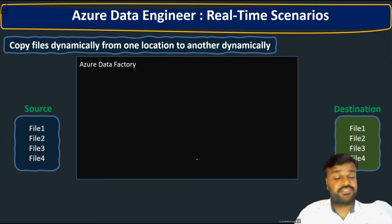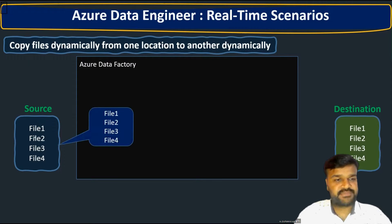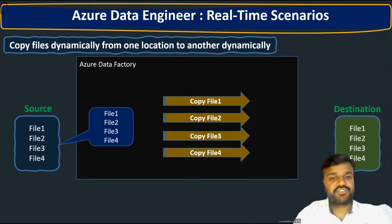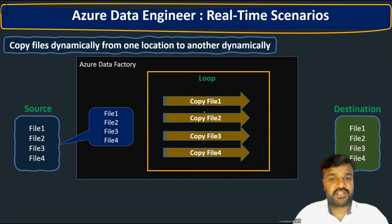We are using Data Factory to move these files from source to destination. First, we need to fetch all the file names into Data Factory. Then, after fetching each file, we copy it from source to destination. Since there are four files, we need to copy four times. The common action each time is copying — the file is different but the action is the same, so we are going to use a loop.